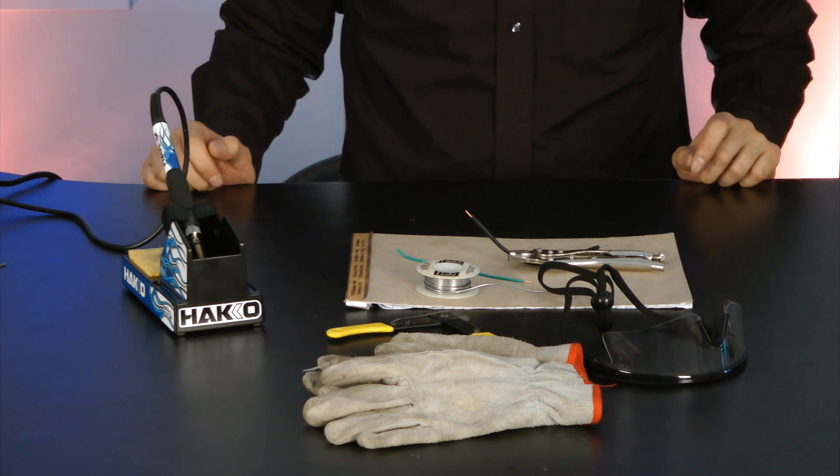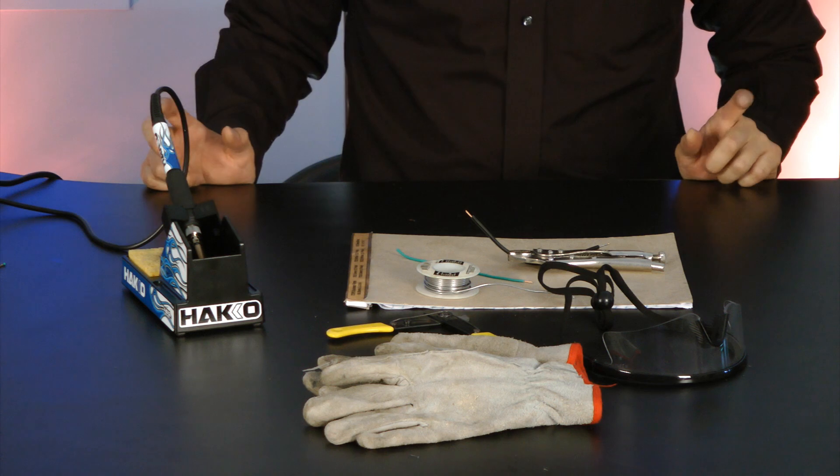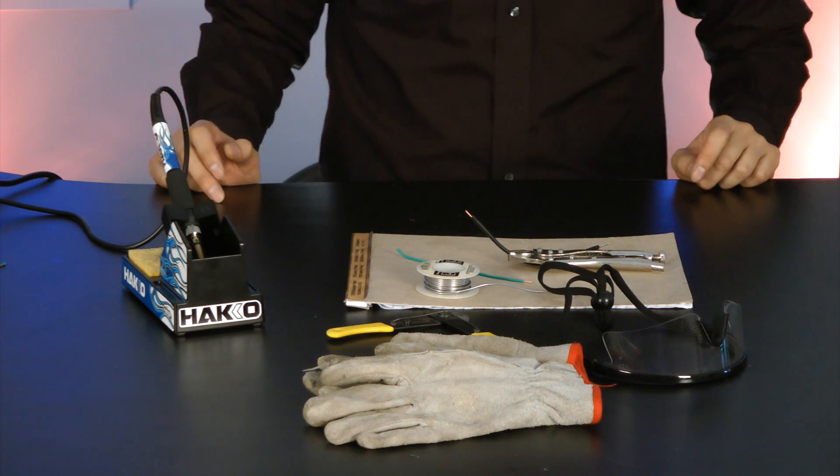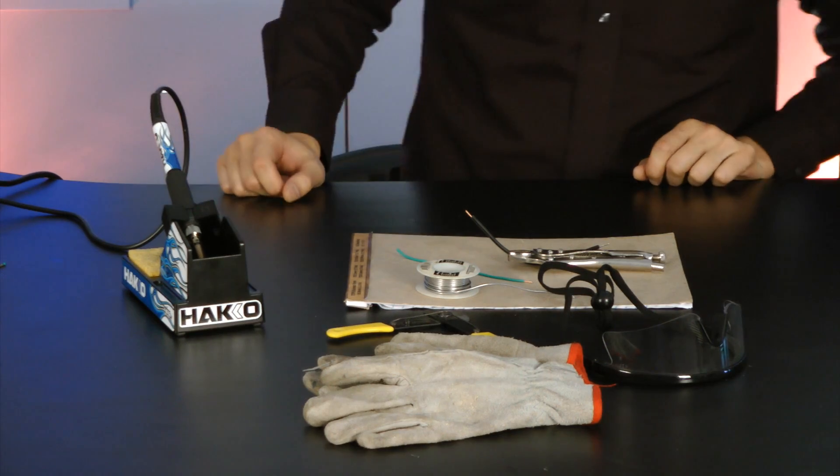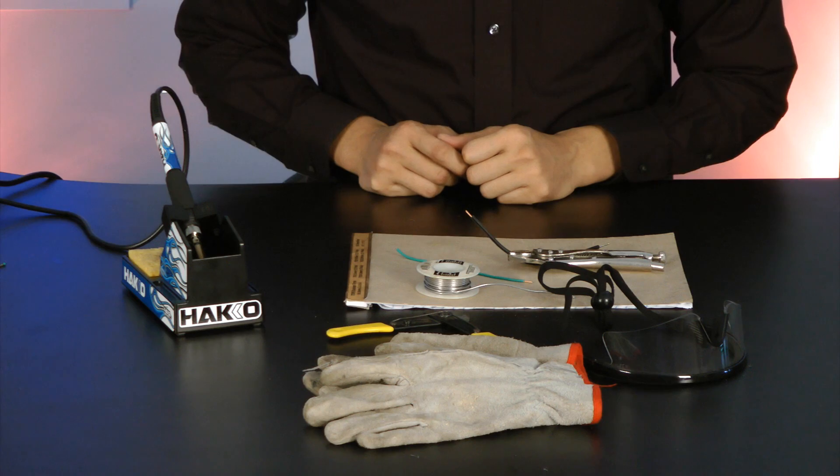With the RC hobby, sooner or later you're going to have to do some soldering. What soldering is, is basically the joining of two wires together with some molten solder. Let's take a look at how to properly solder two wires together.